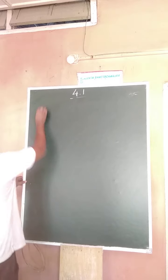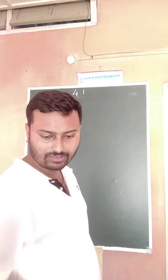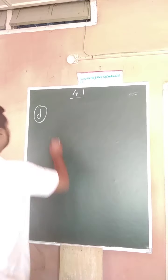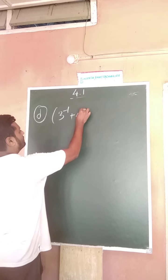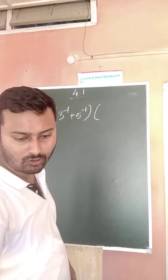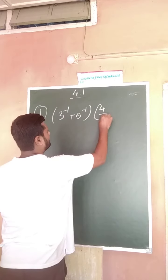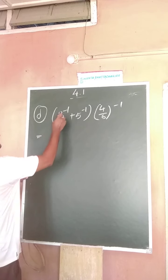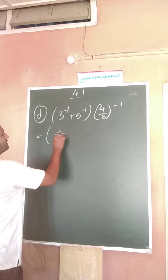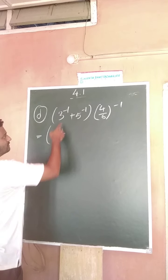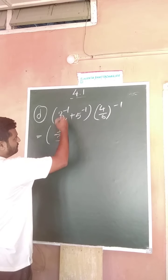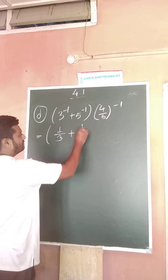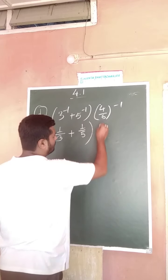Next question is question number D. So question D is: 3 to the power minus 1 plus 5 to the power minus 1, whole into 4 by 5 times 4 to the power minus 1. Now, a to the power minus n is equal to 1 by a to the power n. So 3 to the power minus 1 is equal to 1 by 3, and 5 to the power minus 1 is equal to 1 by 5.